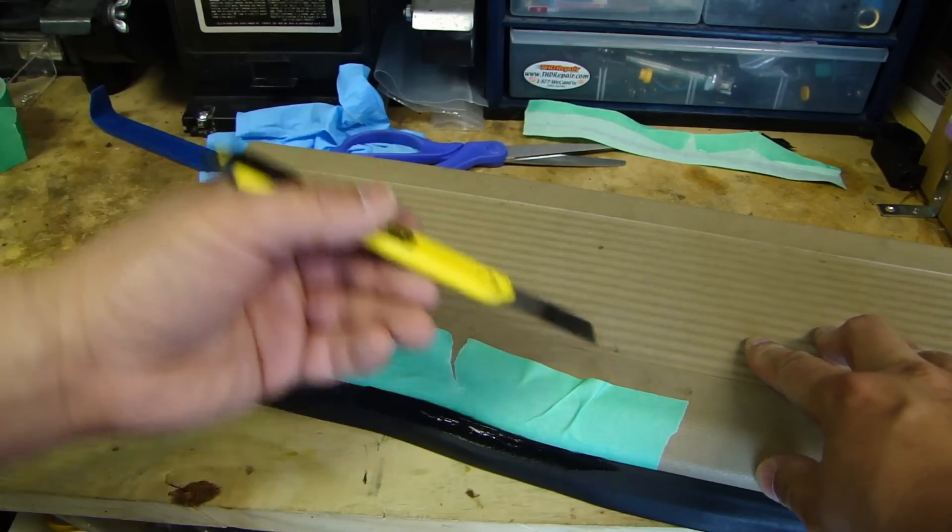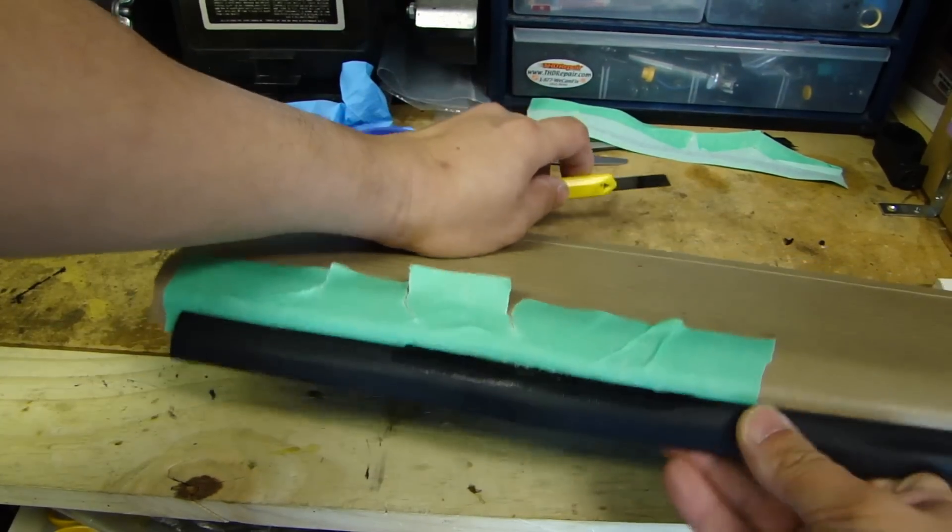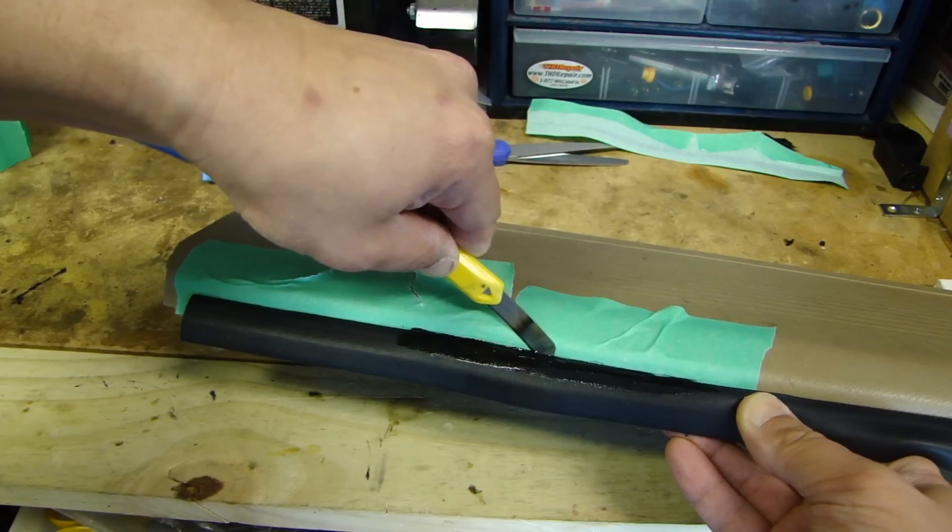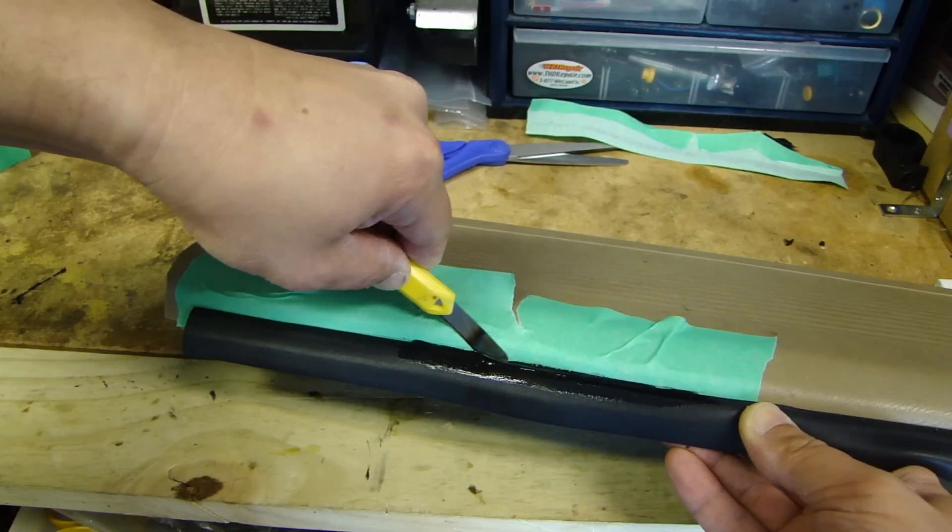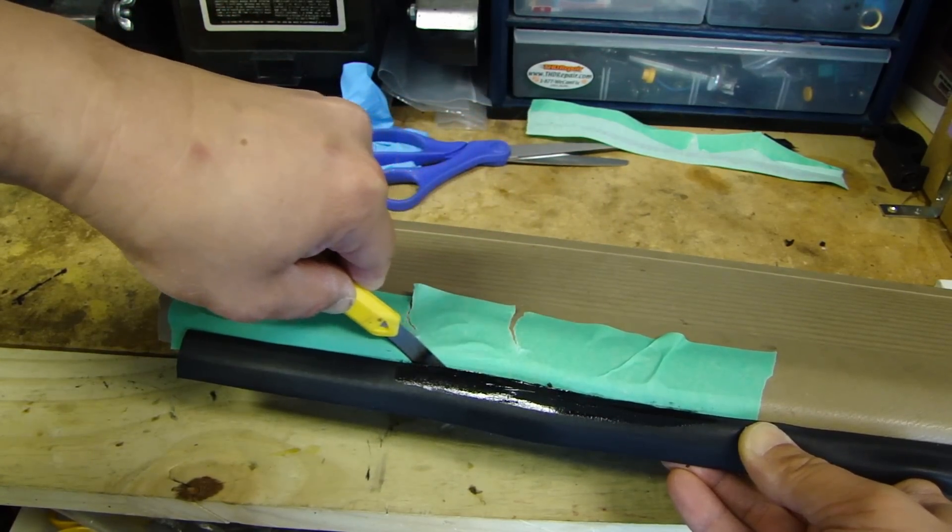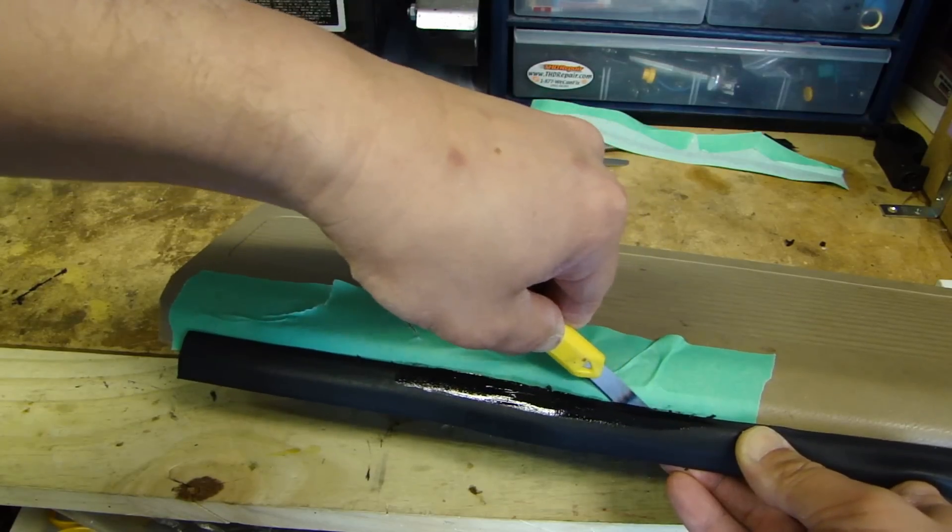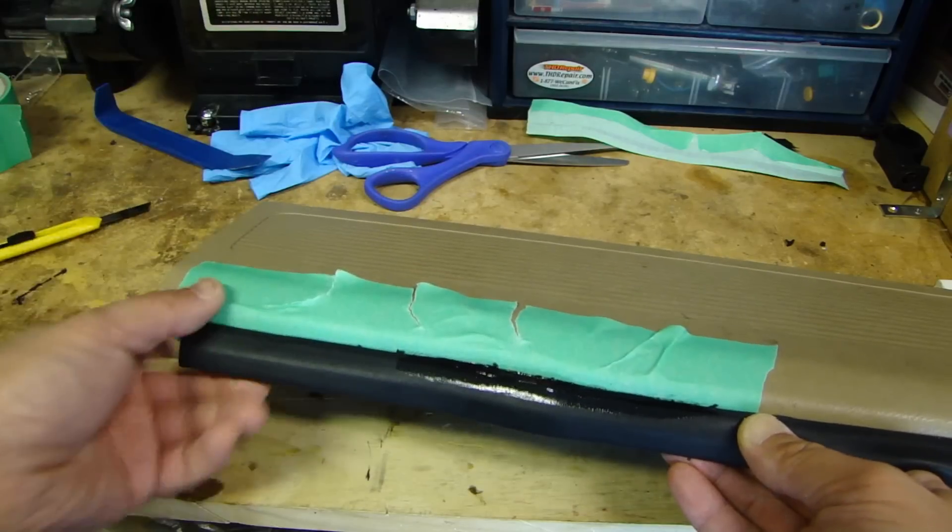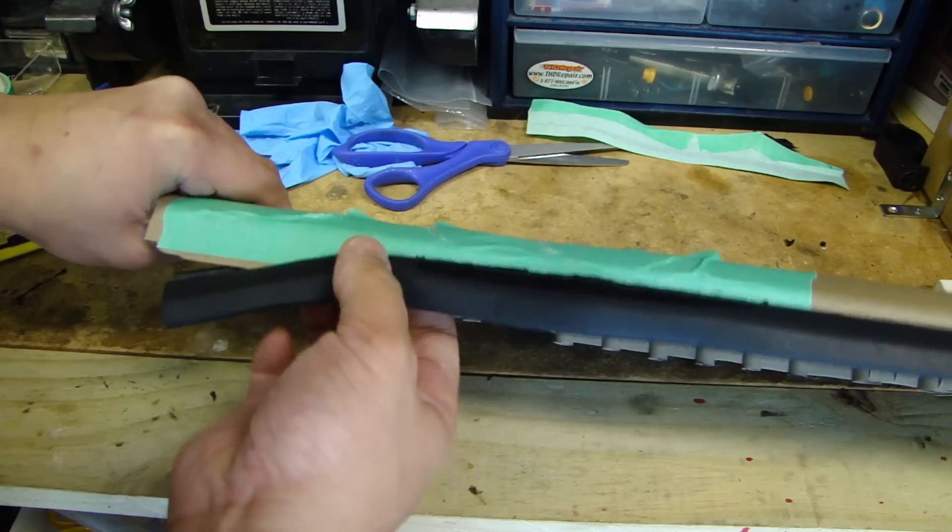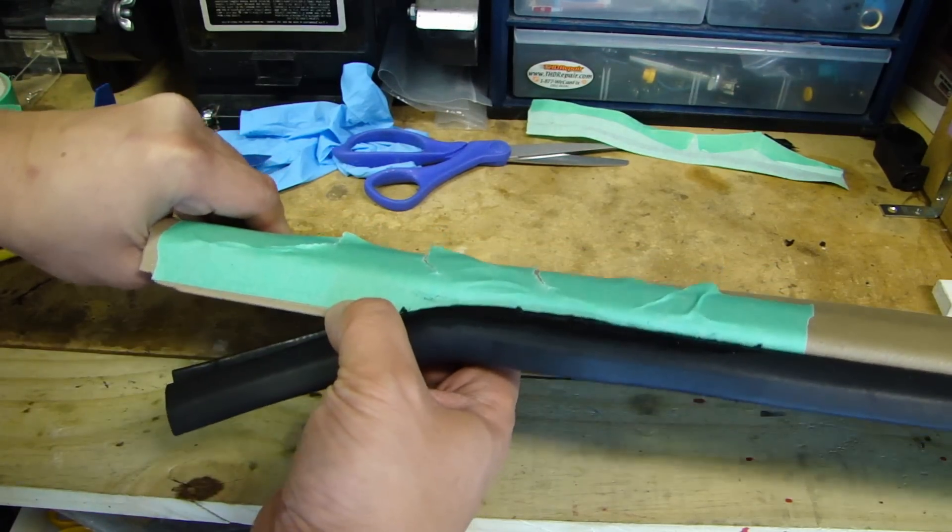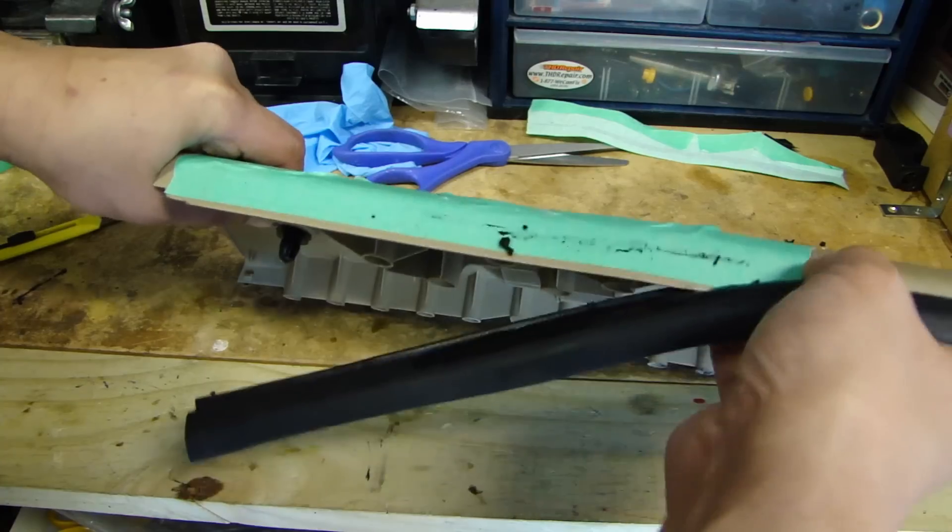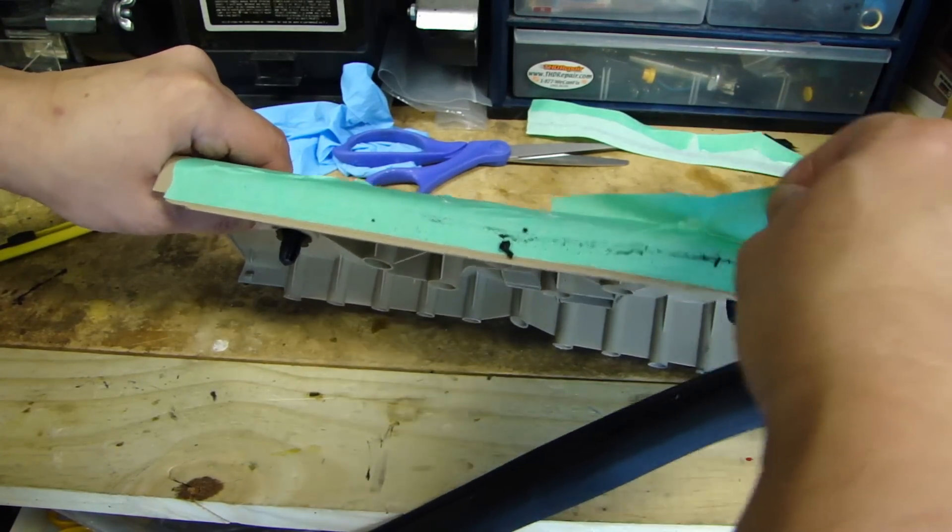So now that I've let the piece dry completely, get yourself a sharp knife and what you want to do is run your knife on this inside edge here along here. Just do this a few times, and then slowly pull this back. Now you can remove the tape.